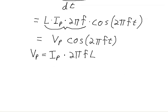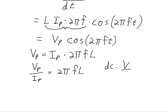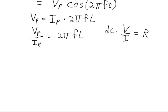We can see the ratio of the peak voltage to the peak current is equal to 2πF times L. This is for a sinusoidal AC signal. In DC, voltage over current is the resistance from Ohm's law. So this is sort of like an Ohm's law for AC circuits, comparing the magnitude of the voltage and the current. As the frequency changes, so does the relationship between voltage and current, and as the inductance changes, so does the relationship between voltage and current.